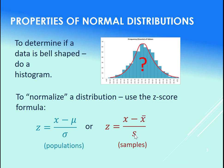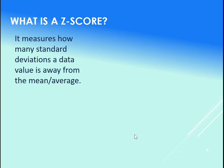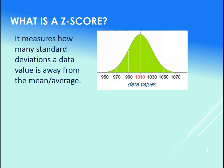So talking more about z-scores: what do they actually measure? Let's say this is our data set right here. We have our mean at 1010, and let's say we have a standard deviation of 20. So that means that we jump up by 20s here.